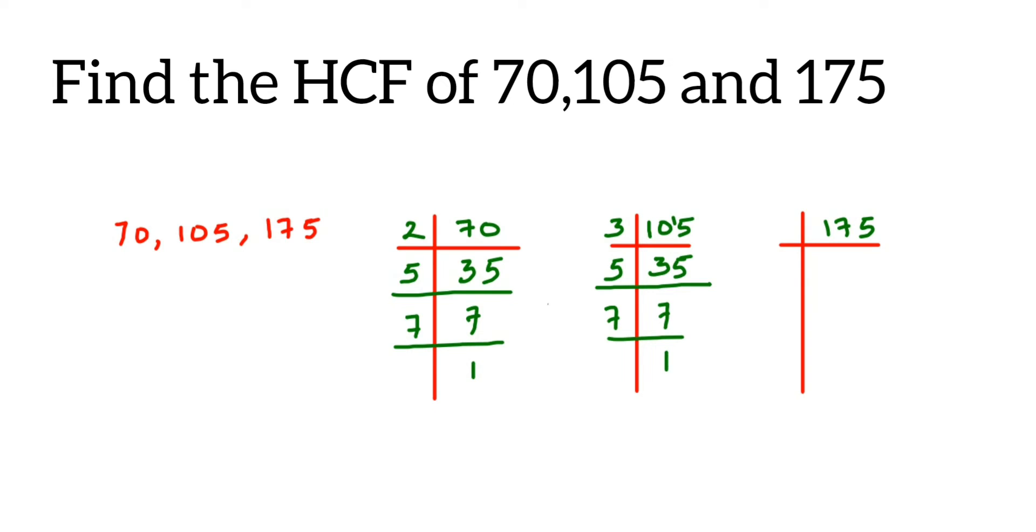Here we have 175. 175 doesn't go in three's table, so I'm going to take 5. 5×3 is 15, 2 is left, that makes the number 25. So 5×5, again 5×7 is 35, 7×1 is 7.